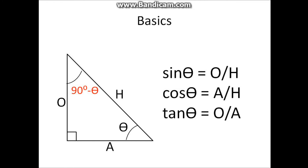Here are the basics. This is a triangle of lengths O, H, and A. What do O, H, and A represent? O is this line — the side of the triangle that is opposite theta, this angle right here.